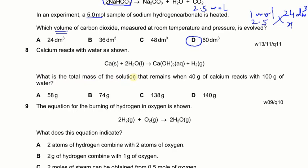Next question: what is the total mass of solution remaining when 40 g of calcium reacts with 100 g of water? We start with 40 + 100 = 140 g. In this equation, solid calcium and liquid water produce aqueous calcium hydroxide and hydrogen gas. The hydrogen gas escapes the container, so the mass decreases. We need to find the mass of hydrogen produced.